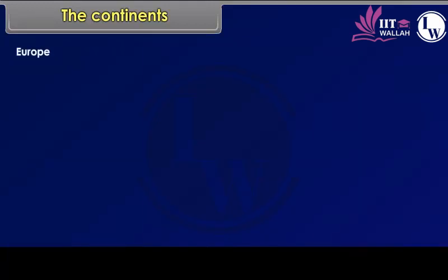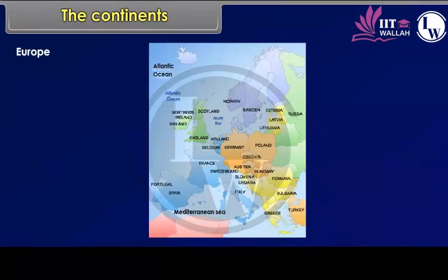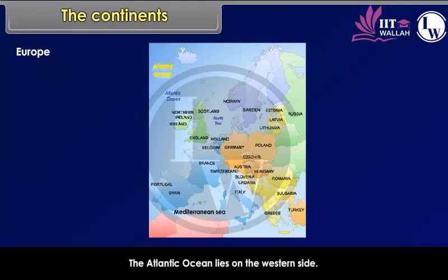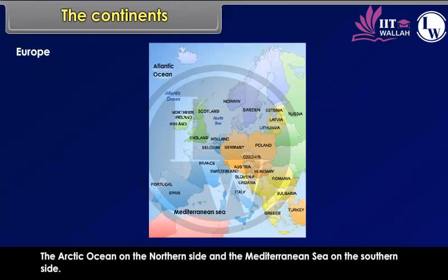Europe is the second-smallest continent. Water bodies bind it on three sides. The Atlantic Ocean lies on the western side, the Arctic Ocean on the northern side, and the Mediterranean Sea on the southern side.